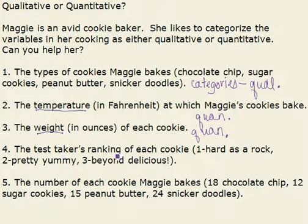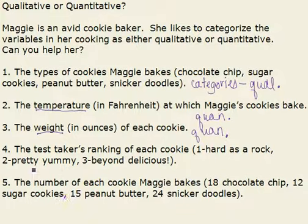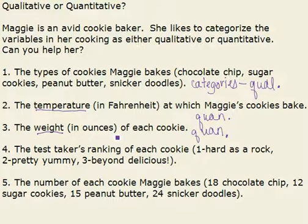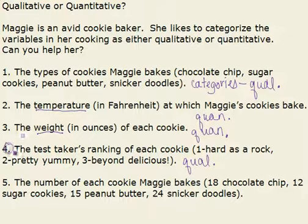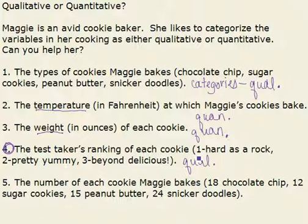Now, test takers' ranking — this is always tricky. A ranking is subjective. One: hard as a rock. Two: pretty yummy. Three: beyond delicious. These 1, 2, 3's are just arbitrary numbers. I could call them A, B, C. I could say they're 10, 20, and 30. I could give it a 1 to 5 scale or a 1 to 10 scale. So because it's just arbitrary, it's actually qualitative. This is usually a tricky one, because there are numbers in the problem, except the numbers don't really mean anything. So be careful about that one.